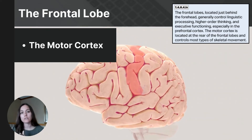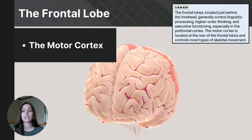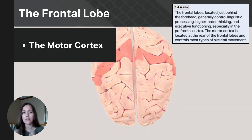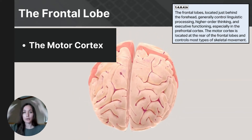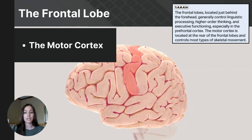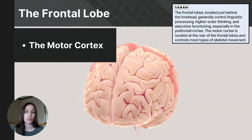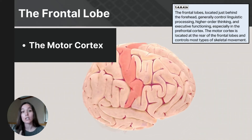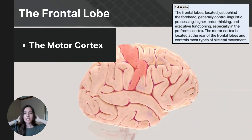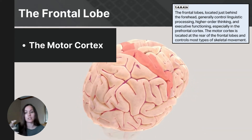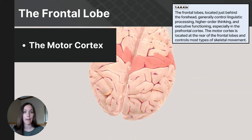While the cerebellum is also involved with movement, the motor cortex and cerebellum have slightly different but complementary roles. The motor cortex in the frontal lobe is primarily responsible for initiating and planning voluntary movements by sending direct motor commands to the muscles — determining what movements will be made and how they will be executed. The cerebellum, meanwhile, adjusts motor commands and ensures precision, balance, and smooth execution, coordinating movements as they're happening.